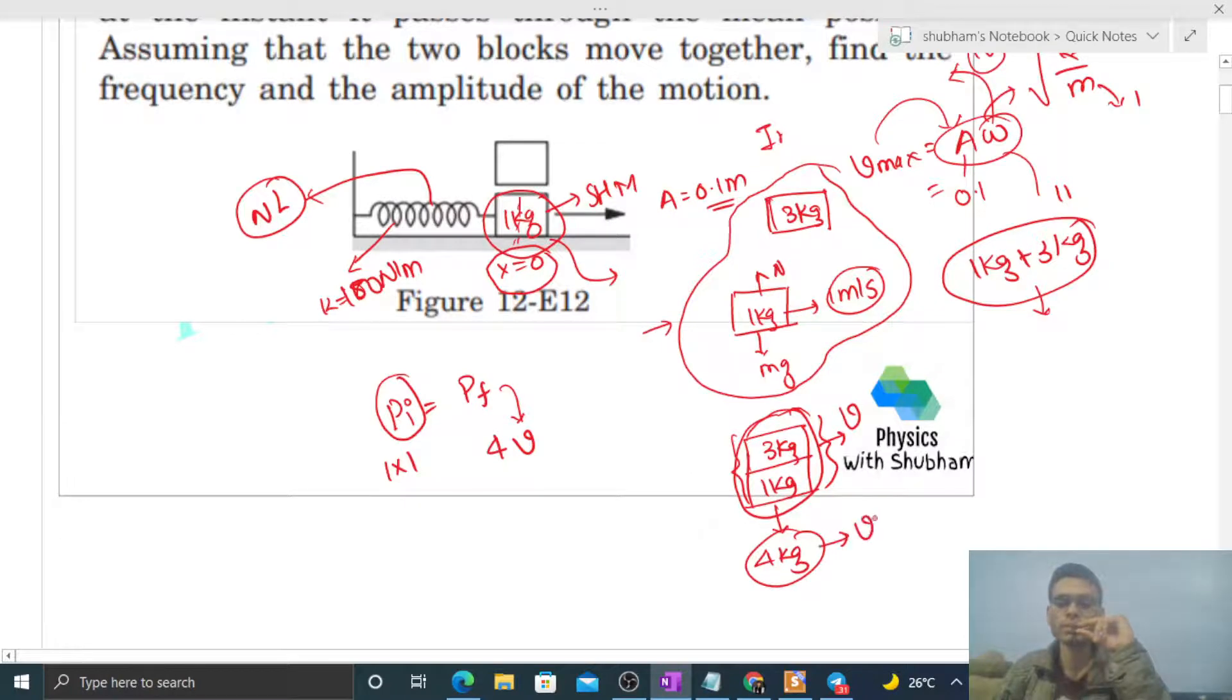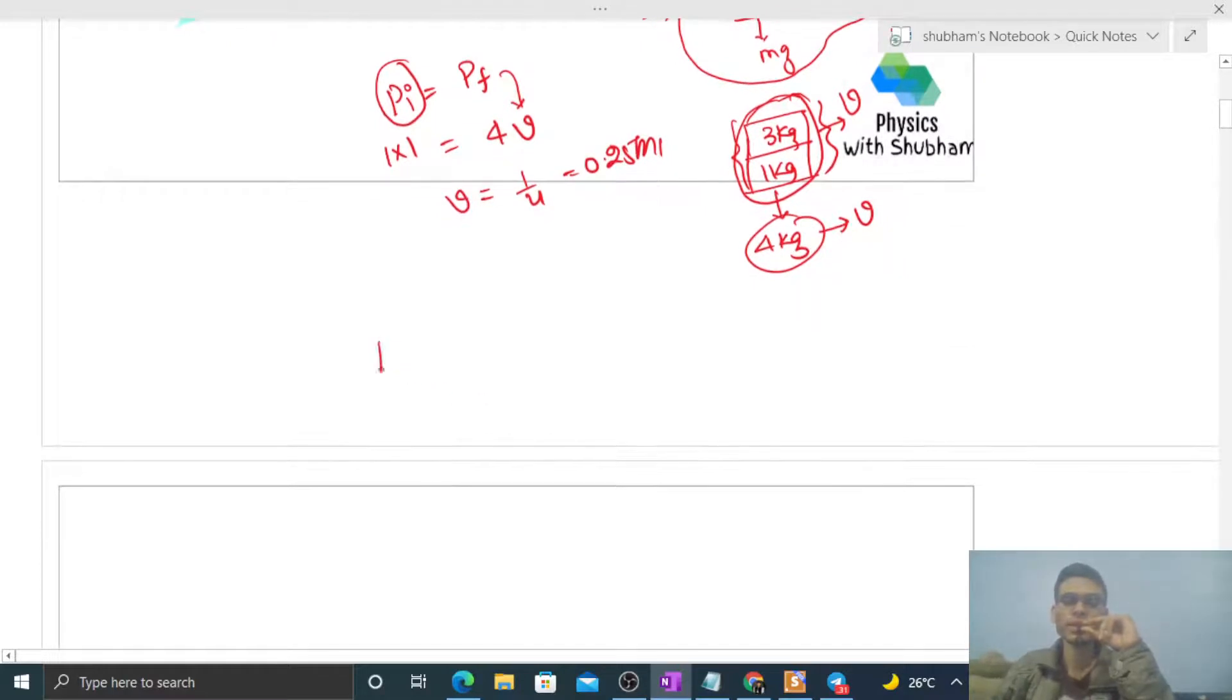So 4 times v. You can see the value of v will be 1 by 4, that is 0.25 meter per second. Now we have the condition that there's a block whose mass is 4 kilogram and it is moving with 0.25 meter per second.